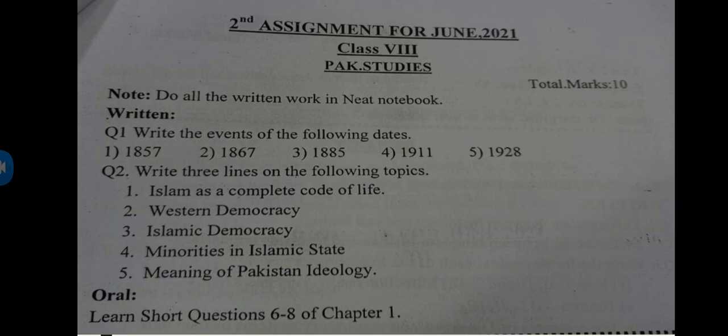This is your second assignment for June 2021. In the same way as you have done the May task in your neat notebook, you will also do this June task in your neat notebooks. Question number one is: write the events of the following dates — 1857, 1867, 1885, 1911, and 1928. You will write only the events of these dates. For example, for 1857, you will write that the War of Independence was started.